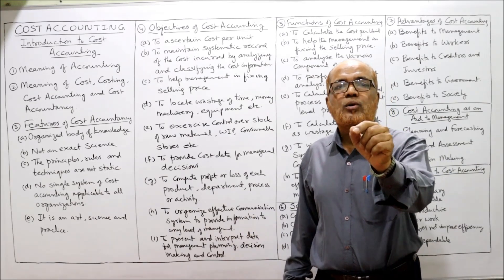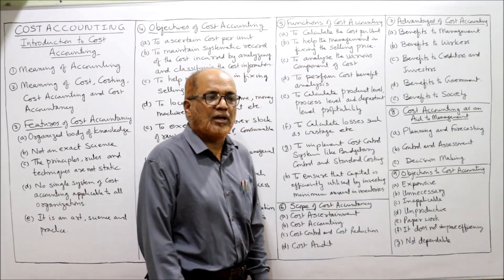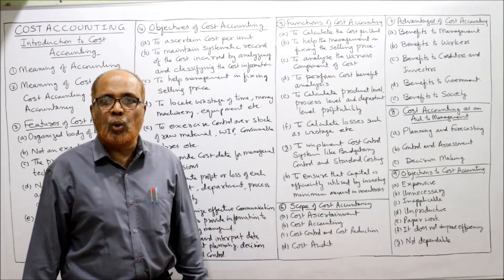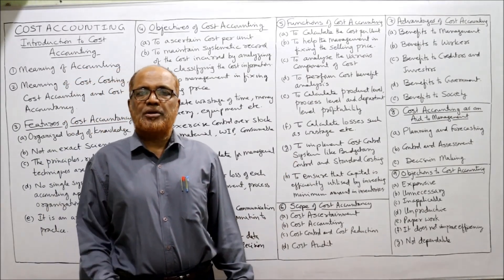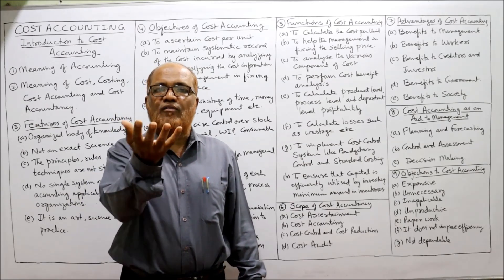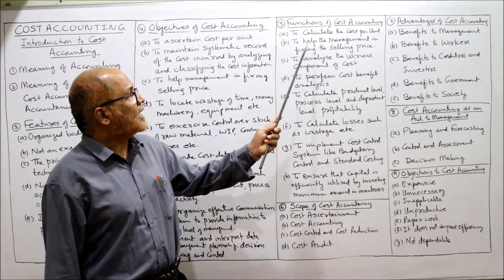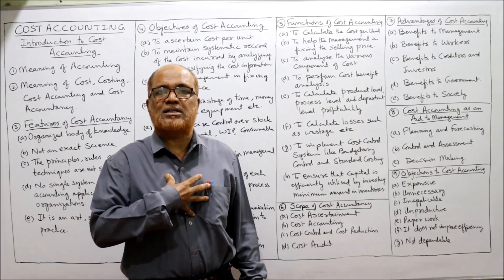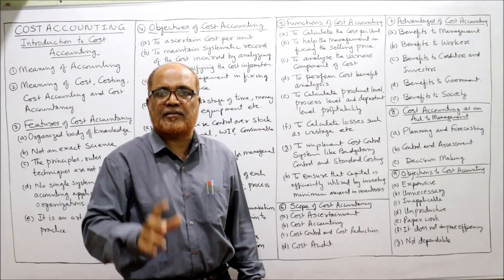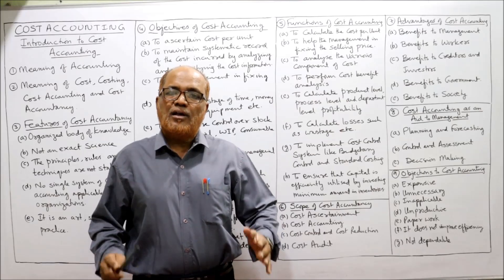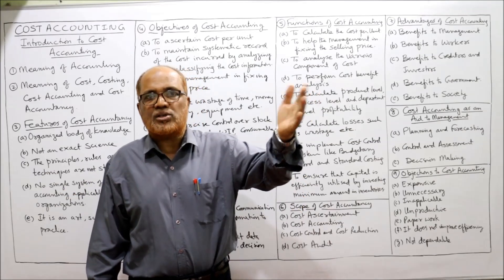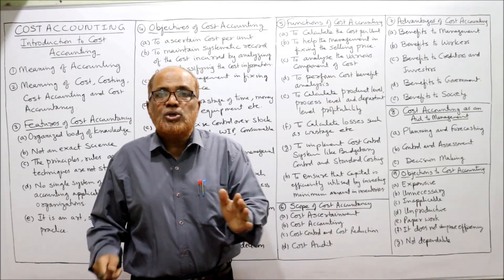The next topic is functions of cost accounting — what activities a cost accountant performs. First, to calculate the cost per unit of goods produced or service provided. Second, to help management in fixing the selling price. Third, to analyze the various components of cost — classifying cost as direct cost, indirect cost, material, labor, overheads — proper classification of different elements of cost is the cost accountant's responsibility.